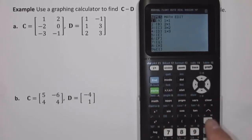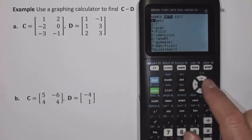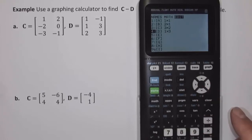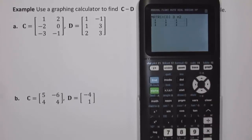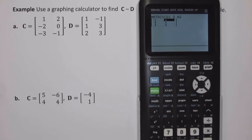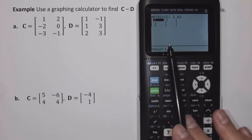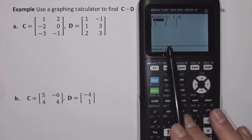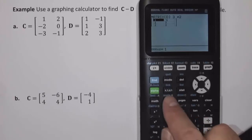Now I'm going to go back to matrix again, edit. This time I'm going to edit matrix D. Matrix D is also a 3 by 2 matrix, so I'm going to enter it into my calculator: 1, negative 1, 1, 3, 2, 3. So I have both matrix C and matrix D entered into my calculator.